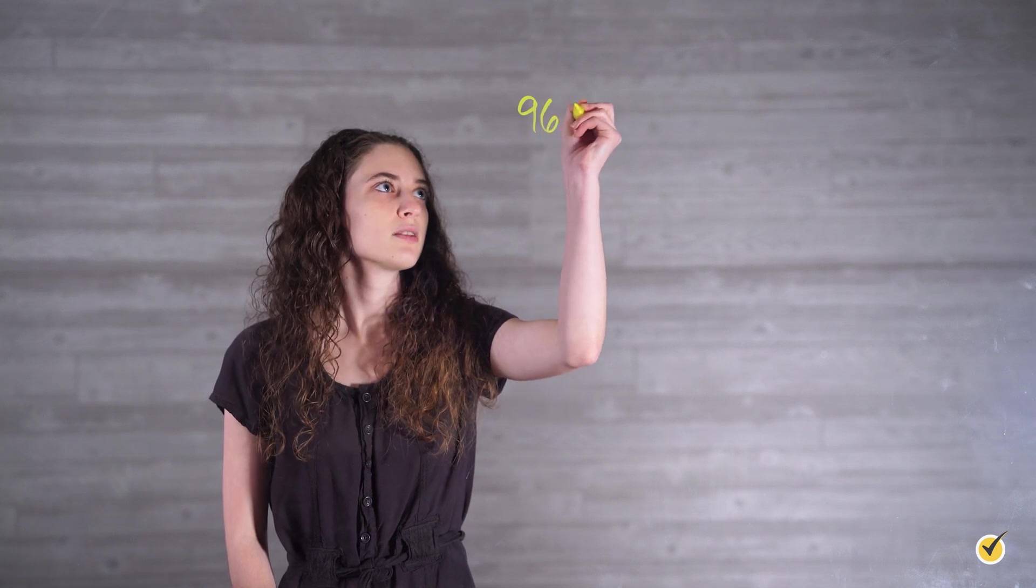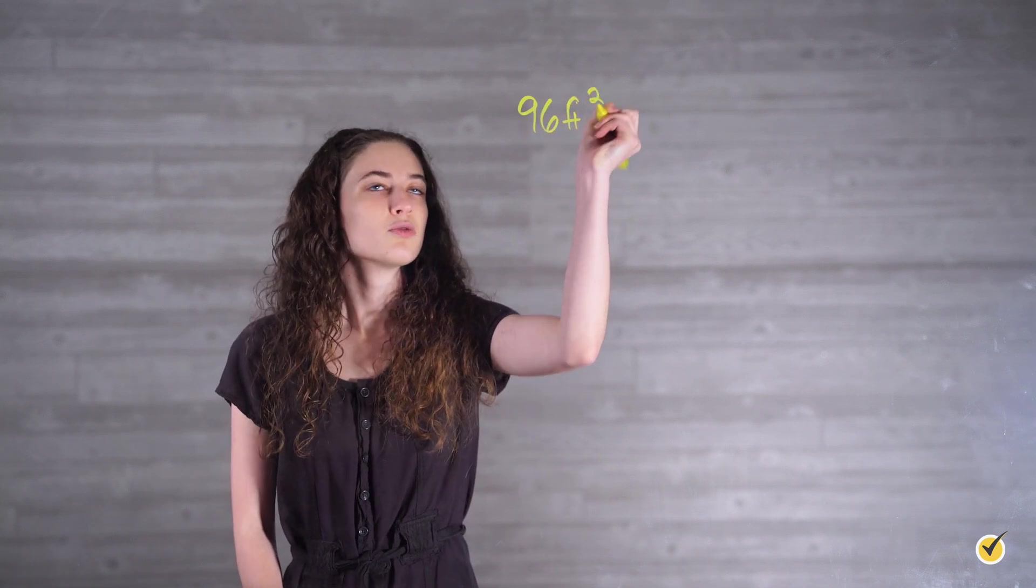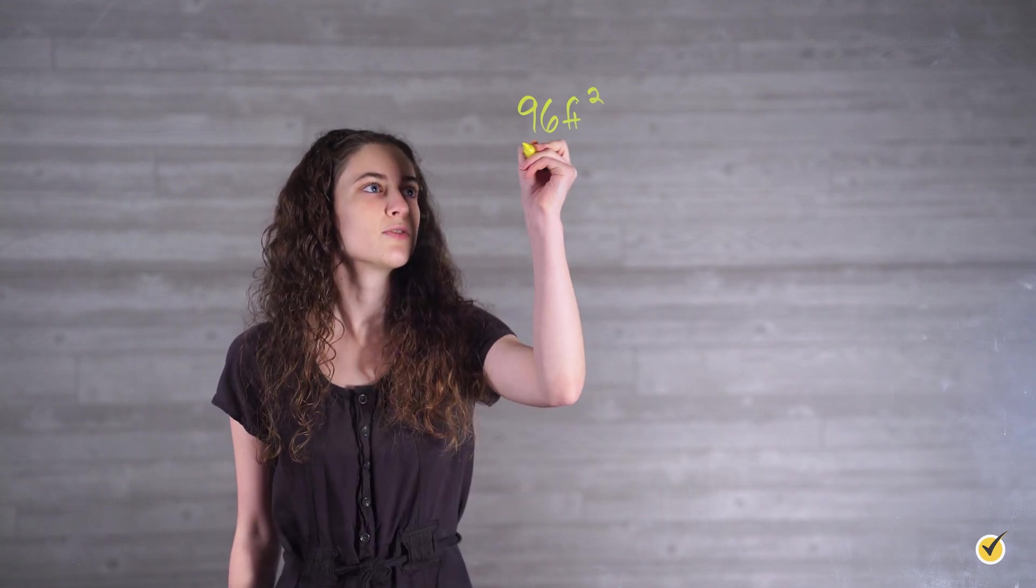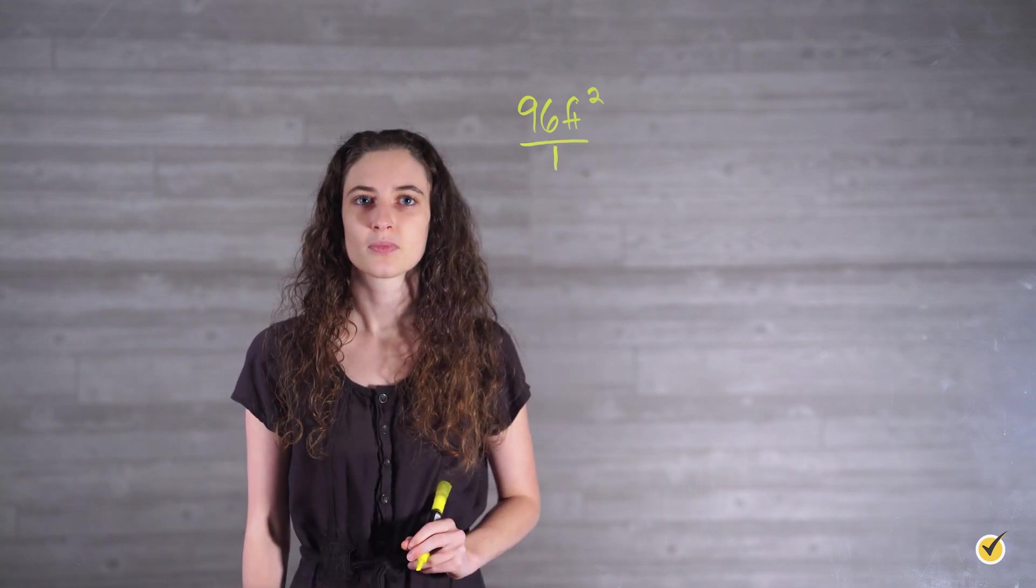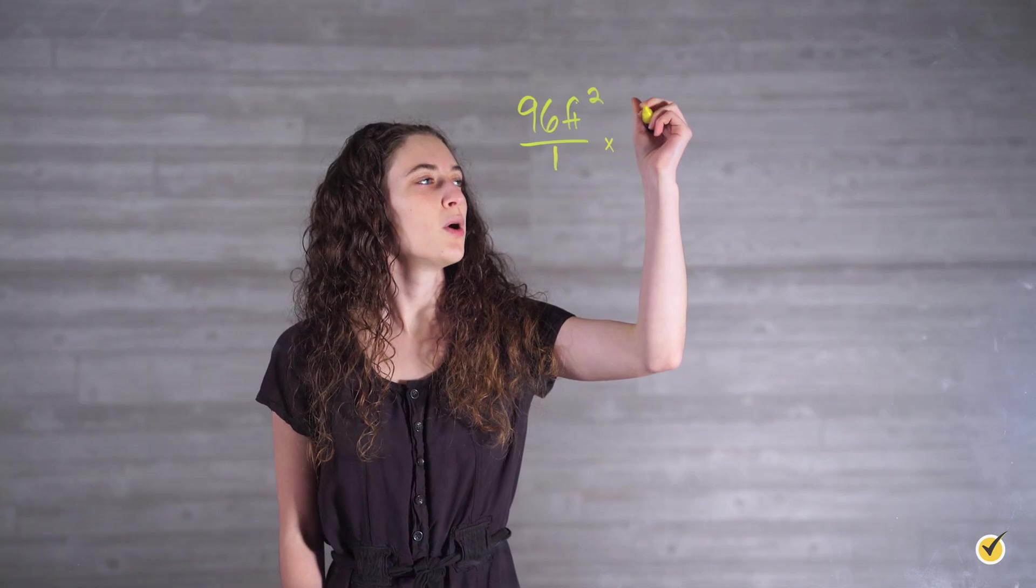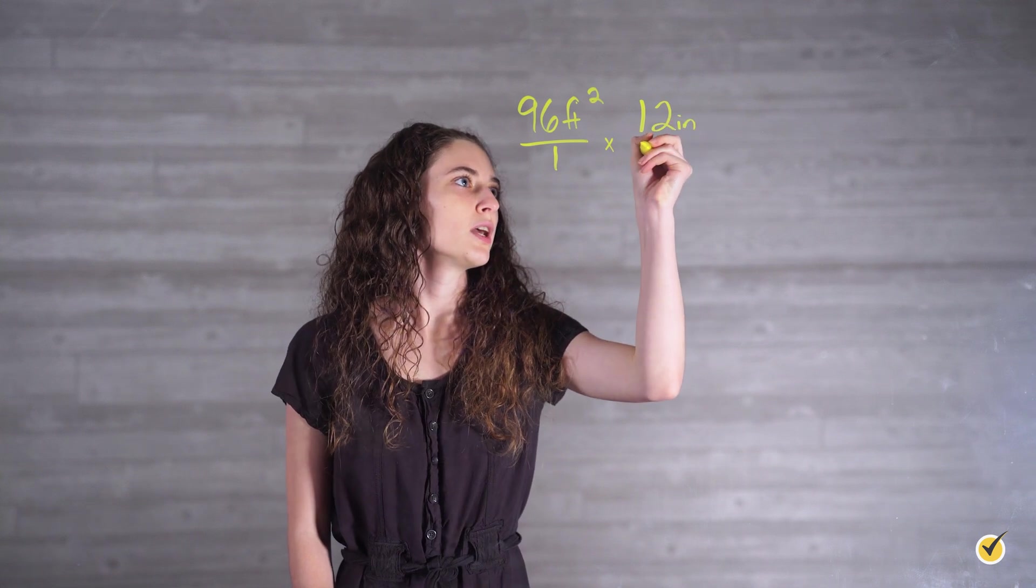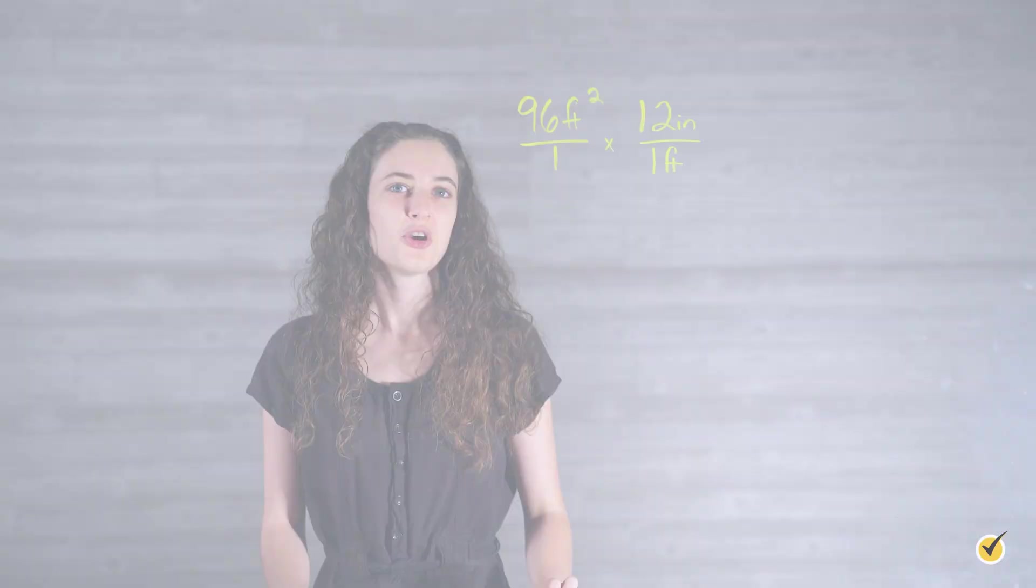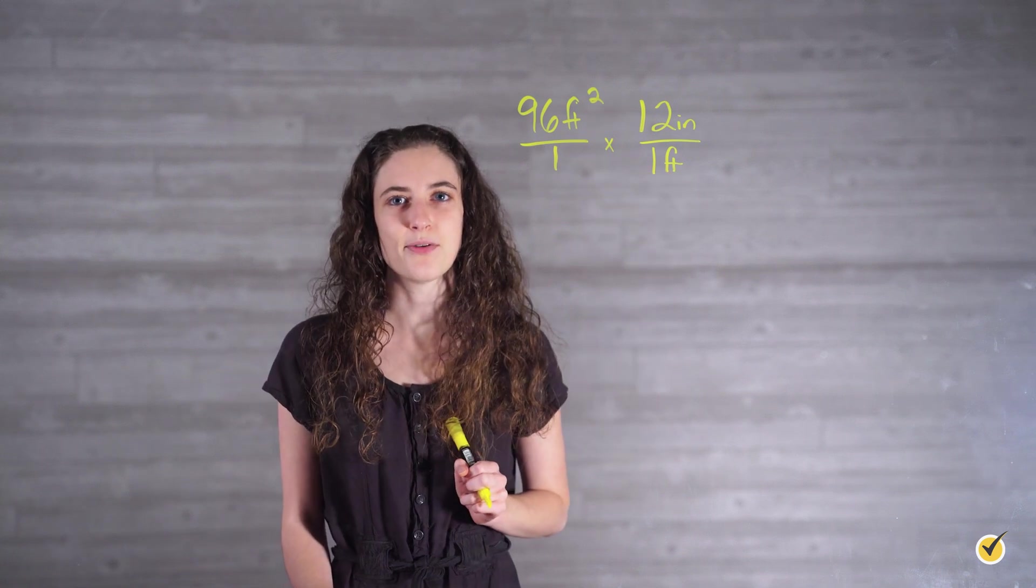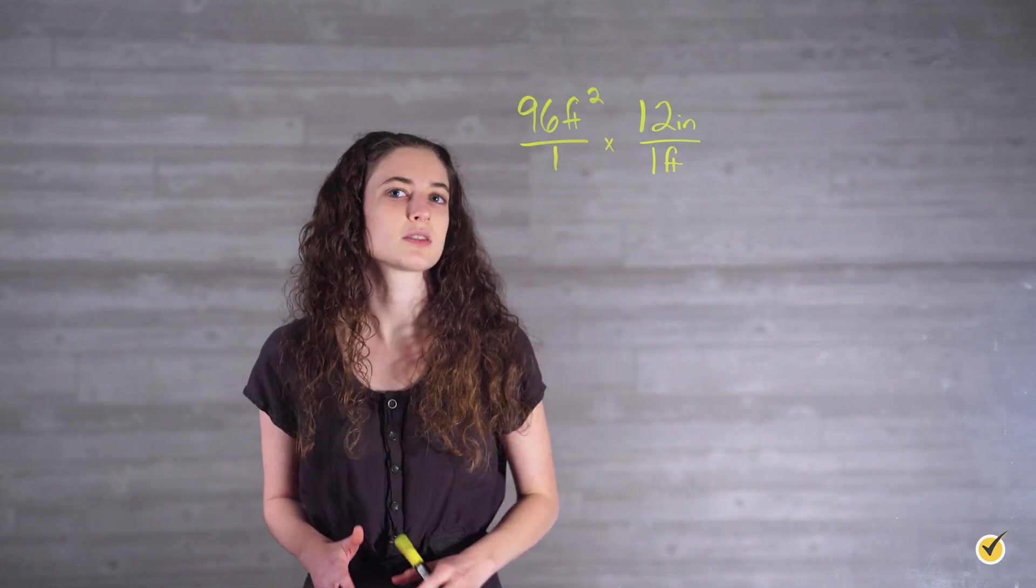We start by writing out our known value. 96 square feet. Remember, we used conversion fractions, so we want to turn this into a fraction, so we divide by 1. Then we multiply by our conversion factor. There are 12 inches in 1 foot. Remember, feet need to be diagonal to each other so that eventually they'll cancel out. But what's wrong with this conversion?